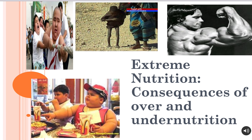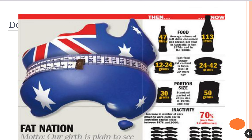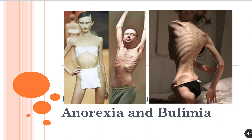Another unit looks at extreme nutrition — this time focusing on first-world issues, as we already pick up on undernutrition in third-world countries in the previous unit. Undernutrition in first-world countries looks very different. We also look at overnutrition as part of malnutrition, examining morbid obesity and super-morbid obesity, and conditions associated with these such as type 2 diabetes and cardiovascular disease. Undernutrition in first-world countries can look very extreme, such as anorexia and bulimia, and we consider the physiological, social, and economic impacts of these diseases, including their long-term consequences.